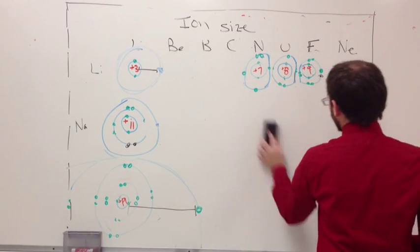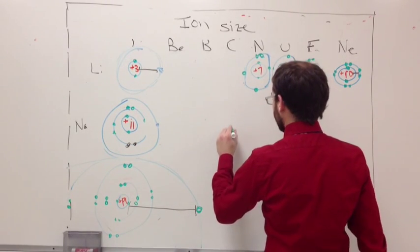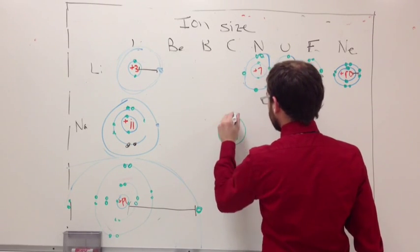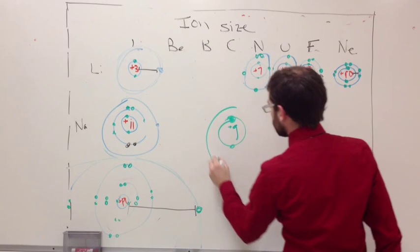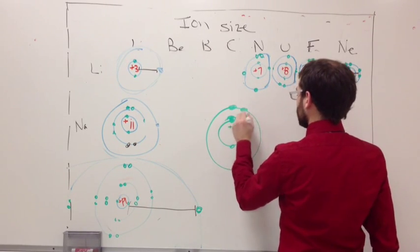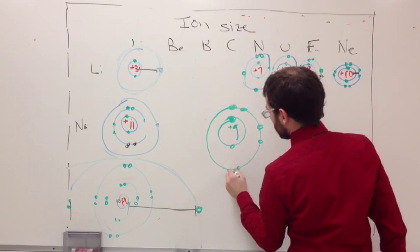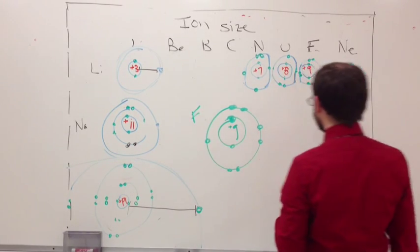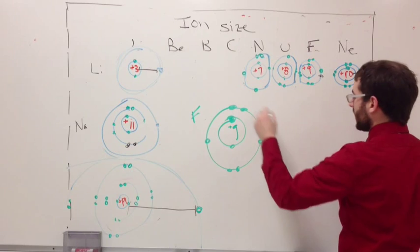So let's look at fluorine, for example. Fluorine is plus nine, which means it has two electrons here, and then it has seven in its outermost energy level, and this is just regular fluorine. Fluorine has seven in its outermost energy level. It wants to gain one.